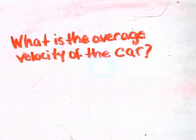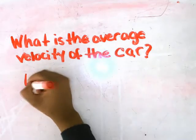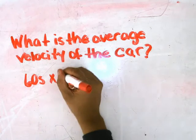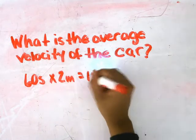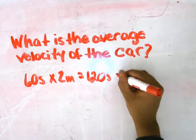Our first step is to figure out how many meters the car is traveling within 2 minutes. Initially, you're going to think about how many seconds are in 2 minutes. There are 60 seconds per minute, so you're going to multiply those and get a total of 120 seconds within 2 minutes.